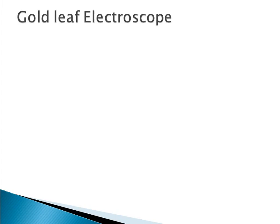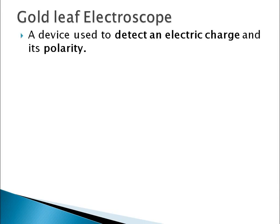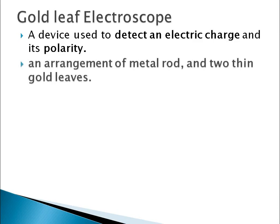Now, another term is gold leaf electroscope. Gold leaf electroscope is a device used to detect an electric charge and its polarity. It's an arrangement of a metal rod which is fixed in a glass vessel, and two thin gold leaves which are attached to the metal rod.